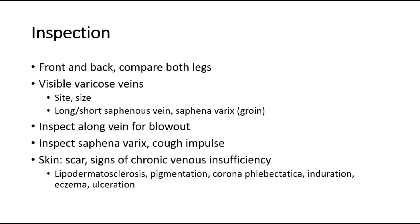First, inspection from front and back — compare both legs. Look for visible varicose veins, their site, size, and extent, whether involving the long saphenous vein or short saphenous vein. Also inspect the saphena varix at the groin area, inspect along the veins for any blowouts, and ask the patient to cough to check for a cough impulse.